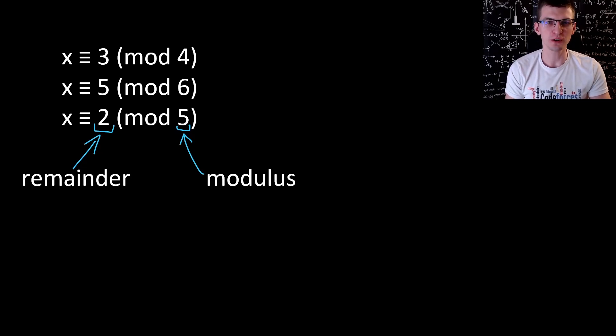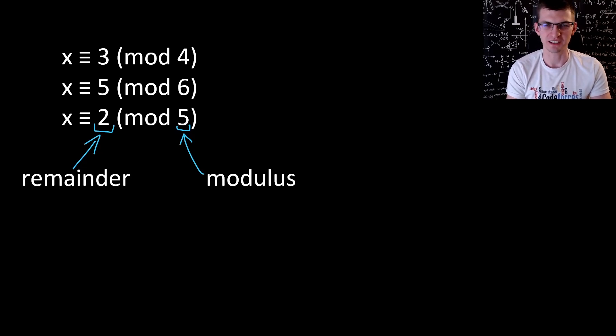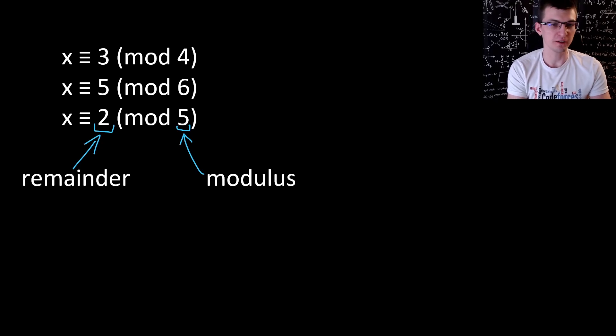Let's solve this system of congruences in 2 minutes. We're looking for the smallest value x equal to 3 modulo 4, 5 modulo 6, and 2 modulo 5.